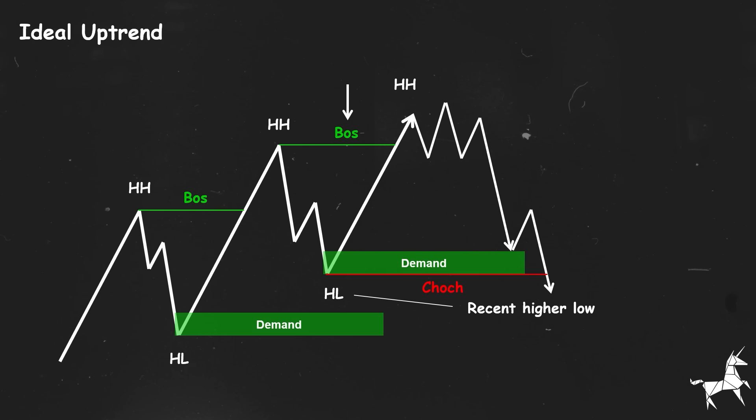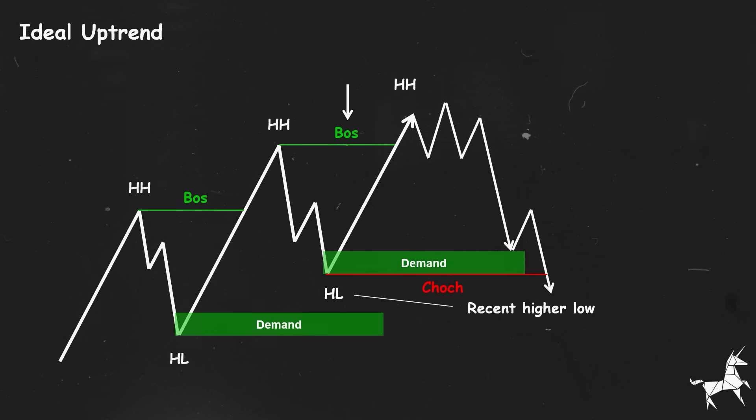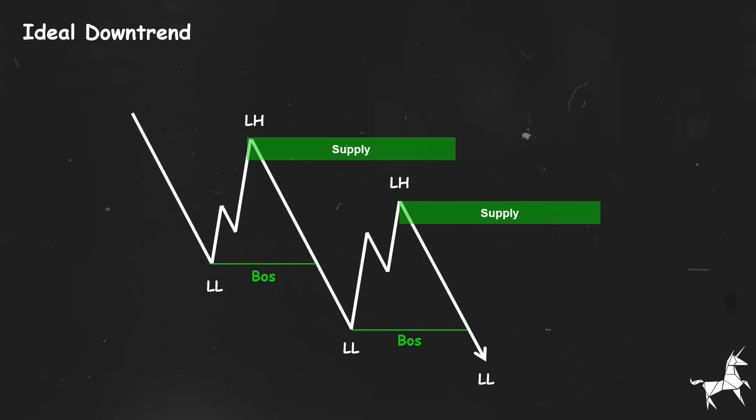The same concept applies to a bearish scenario. When the market is in an ideal downtrend and the price continues to push lower, it respects supply areas and breaks structures to the downside. In other words, it creates lower lows and lower highs. Each time the price breaks a structural level to the downside, a new supply area is automatically formed.